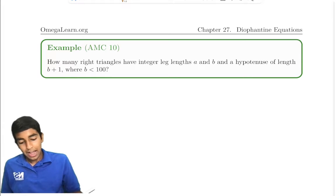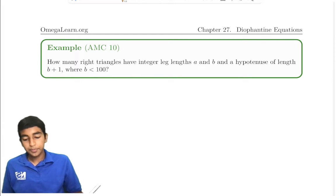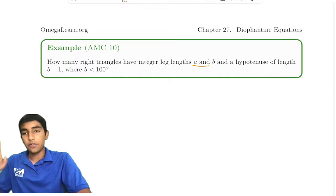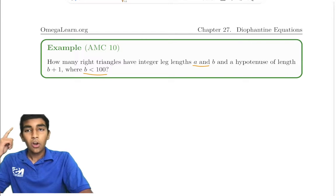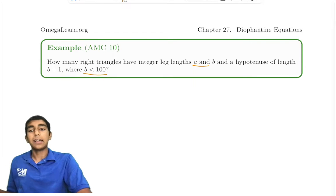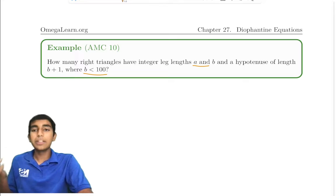Now, let's see an example of what a Diophantine equation really is. How many right triangles have integer side lengths a and b and the hypotenuse of length b + 1, where b is less than 100? Let's start off by applying the Pythagorean theorem, because that's something we definitely know.